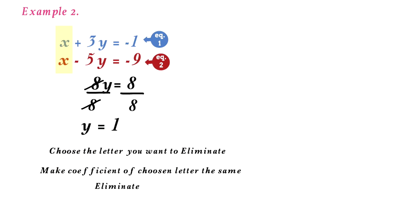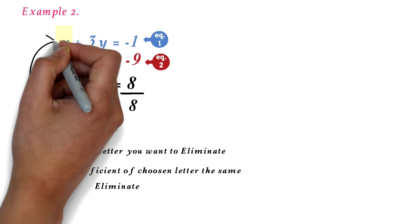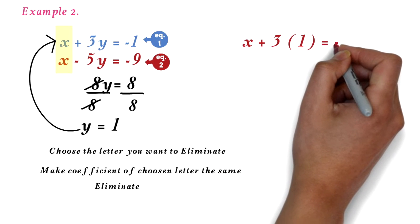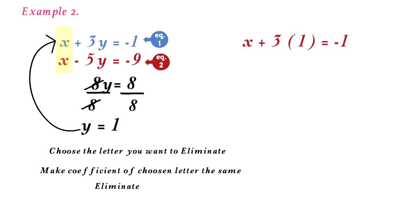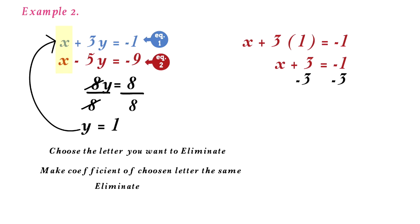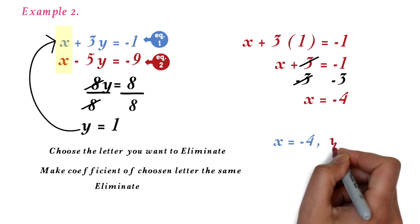To find the x value, substitute y equals 1 into any of the equations and solve. I will choose equation 1. So I have x plus 3 times 1 equals negative 1. 3 times 1 is 3, so we have x plus 3 equals negative 1. Subtract 3 from both sides — the 3 cancels out. Negative 1 minus 3 is negative 4. So x equals negative 4. Our final answer is therefore x equals negative 4 and y equals 1.